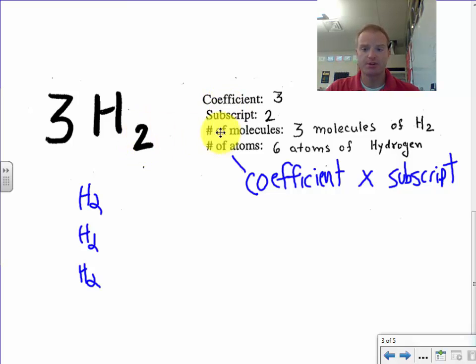And so there's a couple other things here. The number of molecules. The number of molecules, that would be if I could put a circle around this H2, I've got 3 H2 molecules. Now, to find the total number of atoms, and that's probably the most important part for a lot of this, is you multiply that coefficient times a subscript. So 3 times 2 would give me 6 atoms of hydrogen.